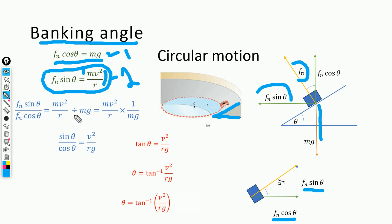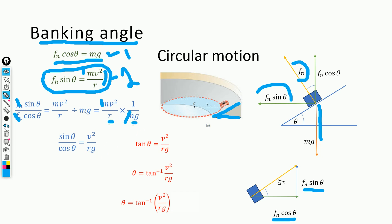Converting the division, we get mv²/r multiplied by 1/mg. The mass m cancels out, and FN cancels out, giving sin θ / cos θ = v²/(rg). Since sin θ / cos θ equals tan θ, we have tan θ = v²/(rg).